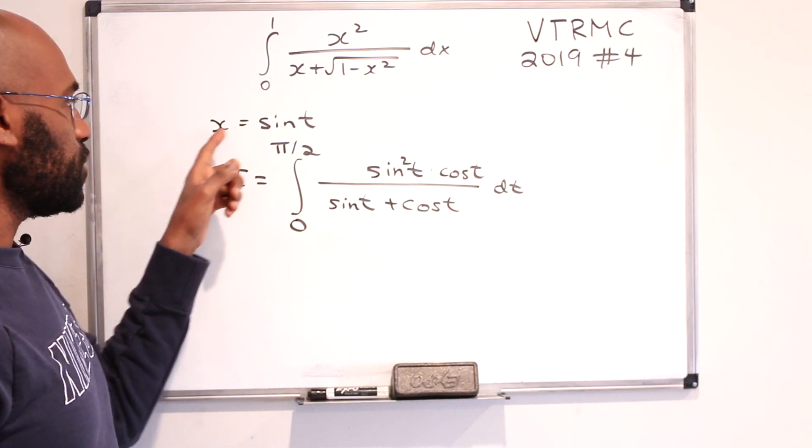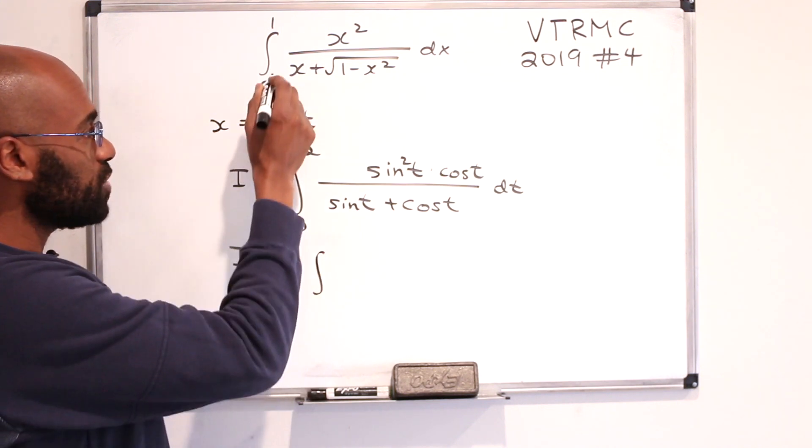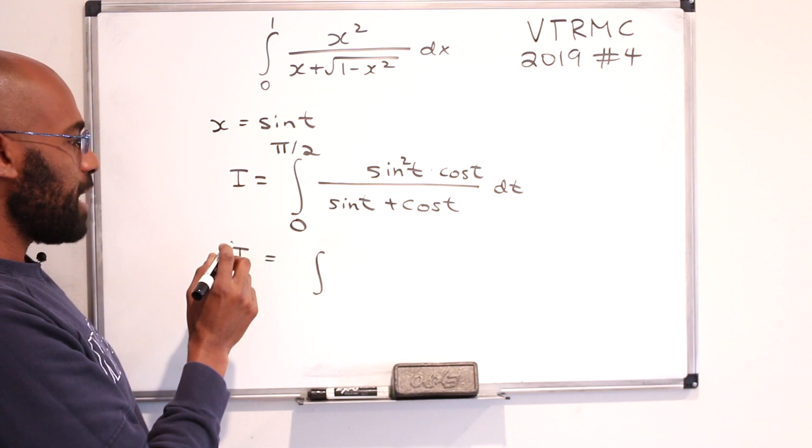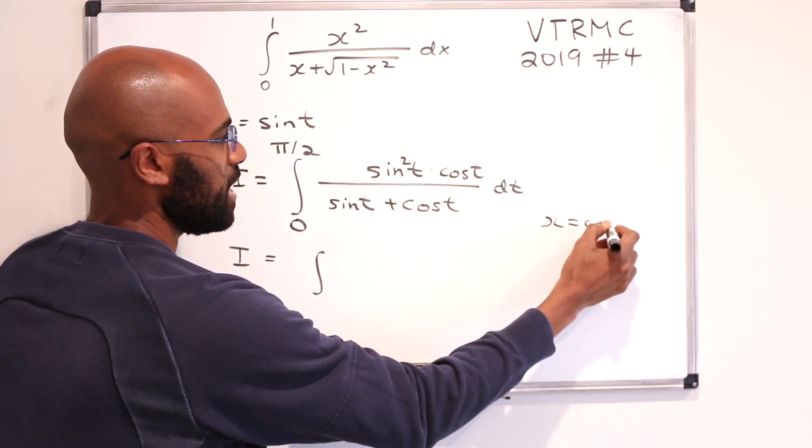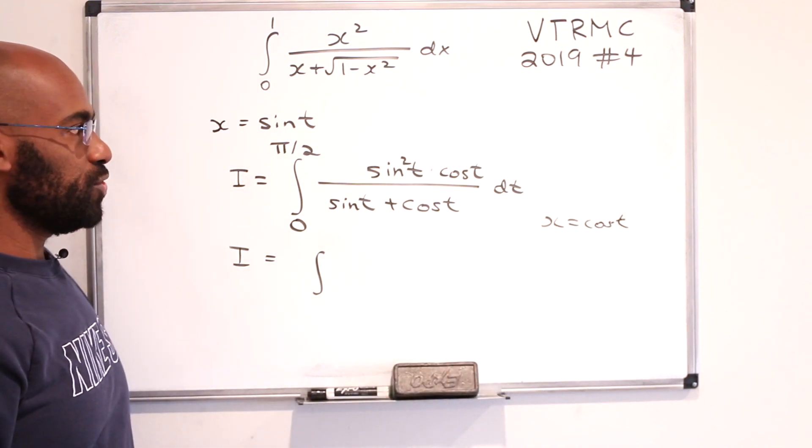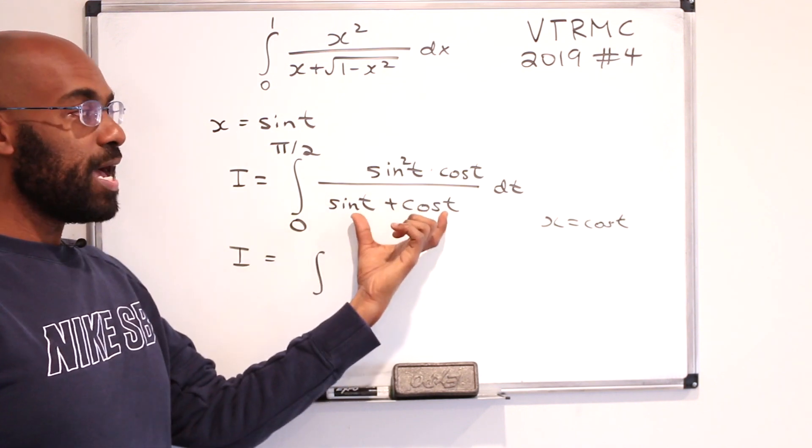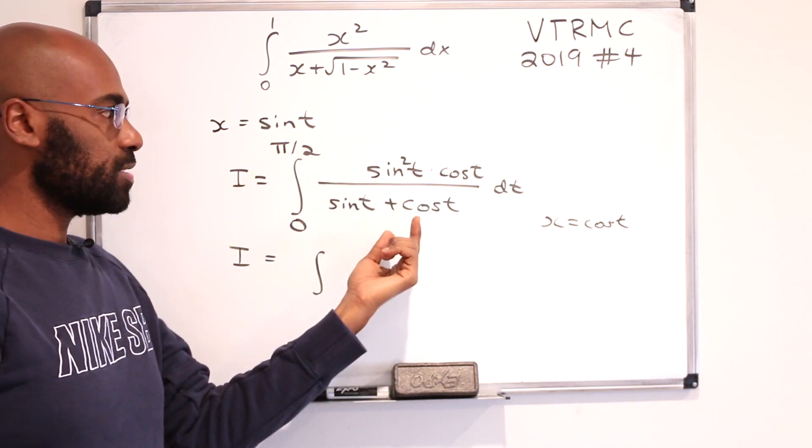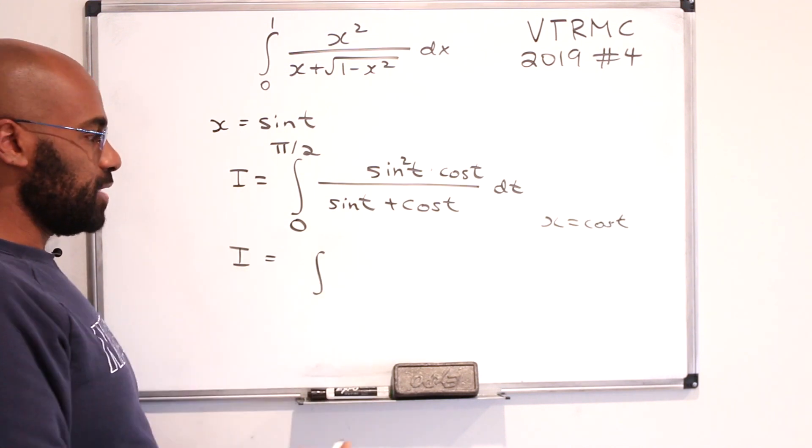We chose to do the substitution sine t, but we could have instead chosen to substitute cosine t, right? So let's see what happens if we do that. I'll write down here, x equals cosine t instead. The reason to suggest even trying to do that is, well, we're probably going to have some type of integrand that's similar to this, but a little bit off. And maybe we can play with the two and see what happens.